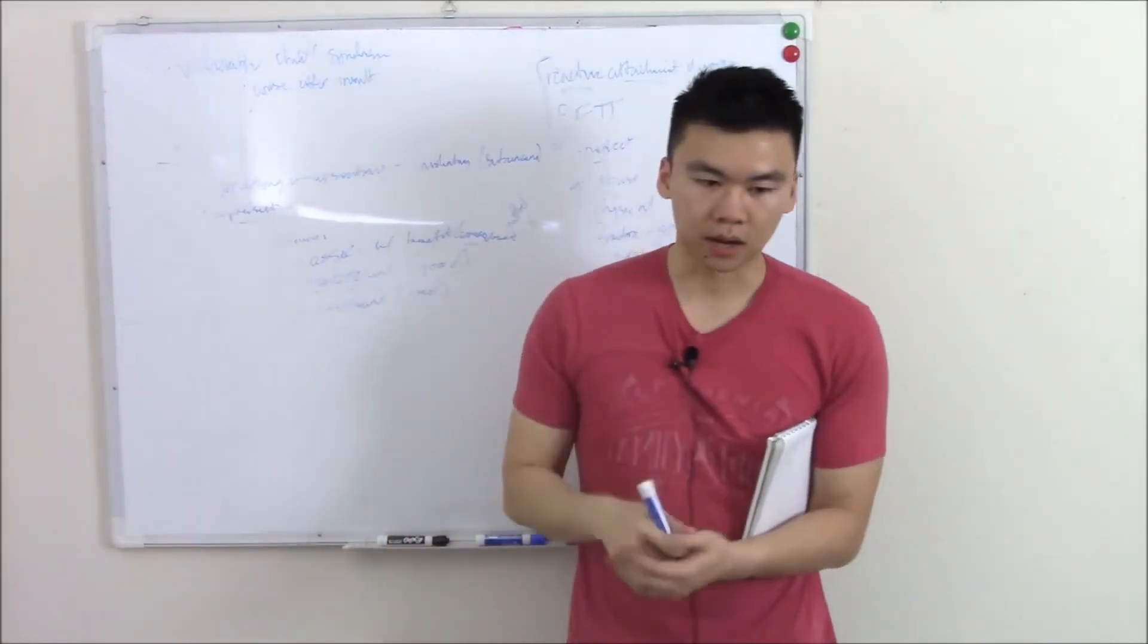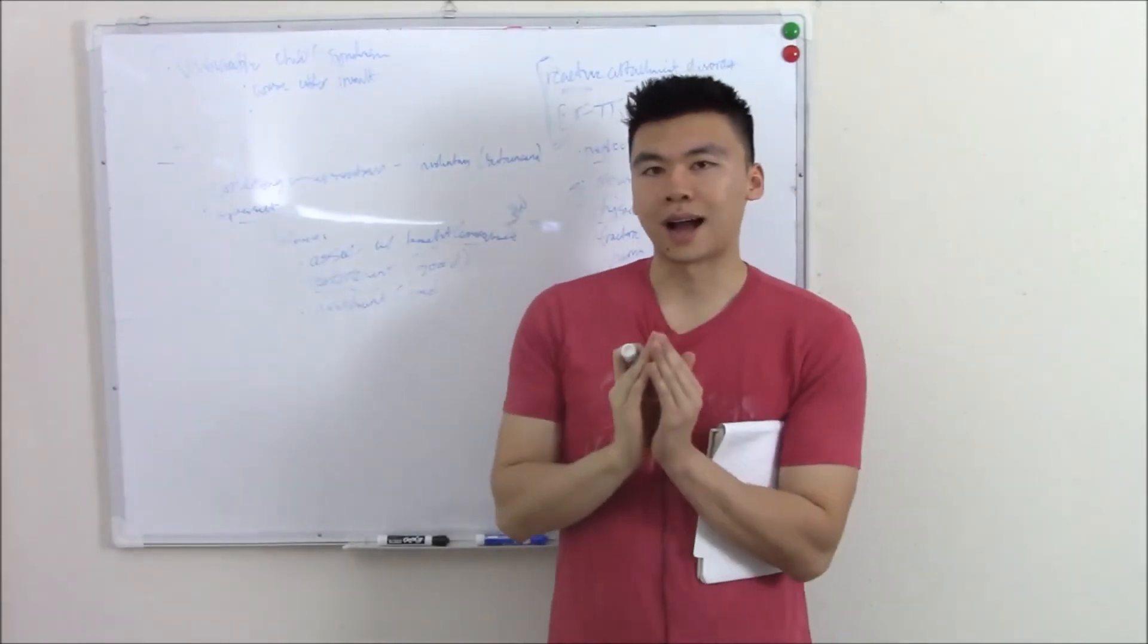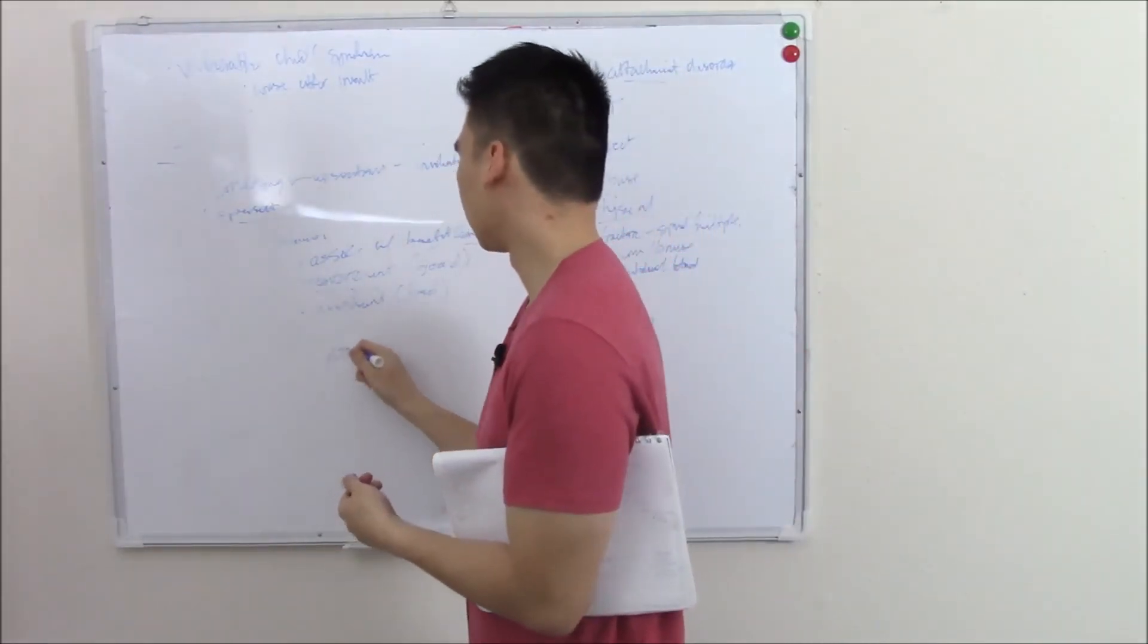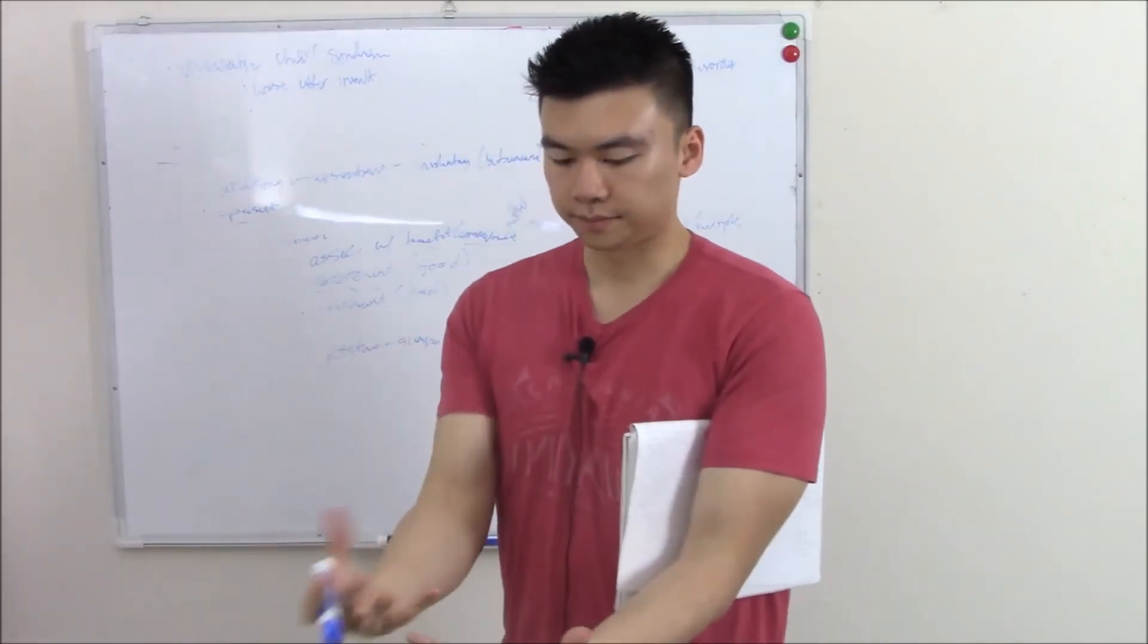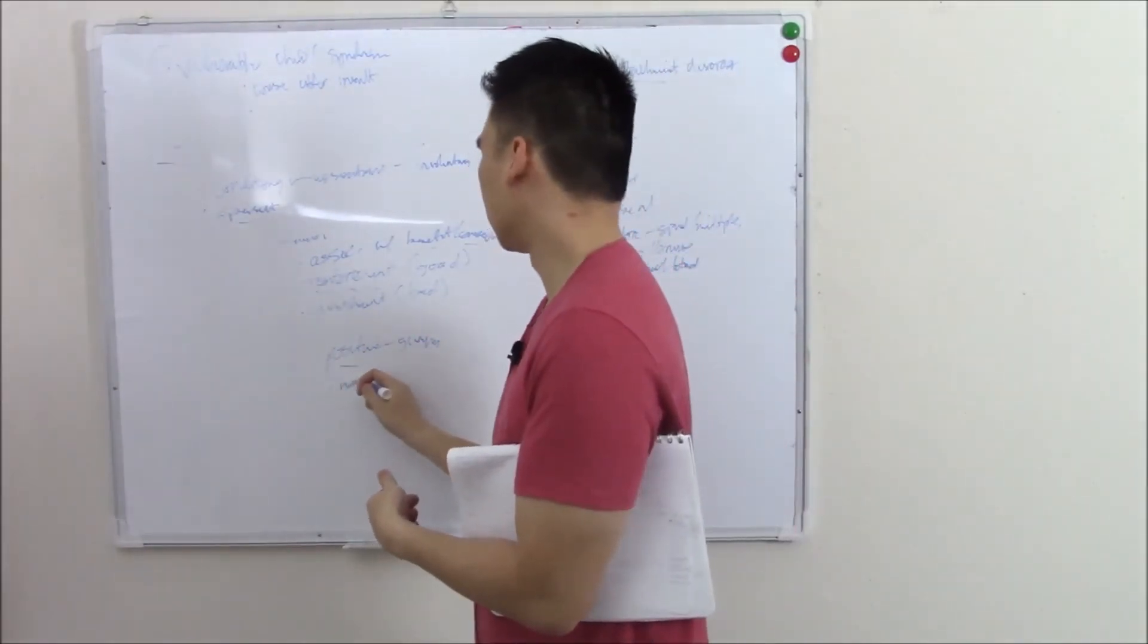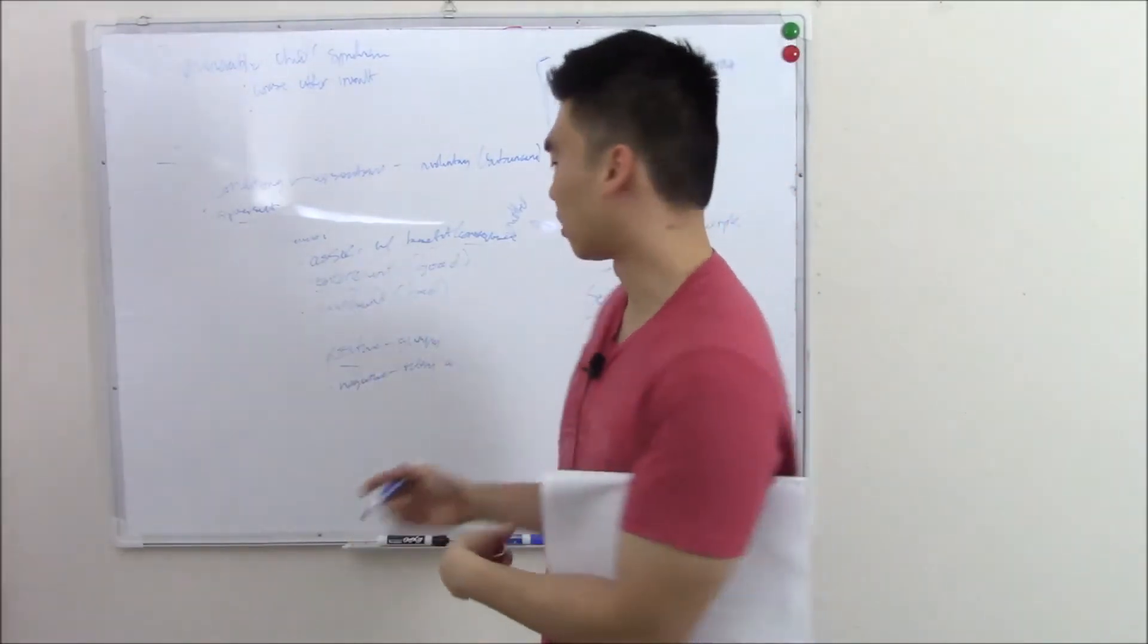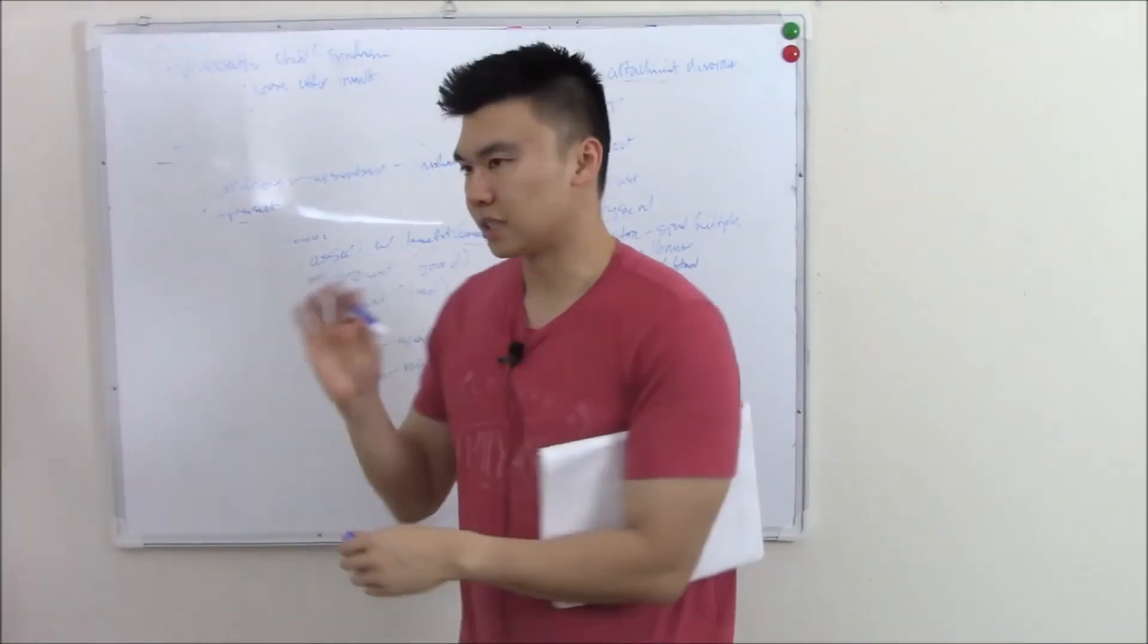Now there's one more concept that I want to talk about and that is positive and negative when we're talking about operant conditioning. These are not associated with good and bad. These are more mathematical terms. Positive means you're giving something. When you give something, the baby has like a net gain. That's why I would call it positive. Negative is you're taking something away. When you take away something from the baby, they have net loss. That's why I call it negative. Again, these are not associated with good and bad.